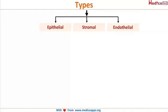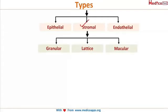There are three main types based on location: epithelial, stromal, and endothelial. For exam purposes, we will focus only on the stromal corneal dystrophies, which are of three types: granular, lattice, and macular — classified based on their appearance.